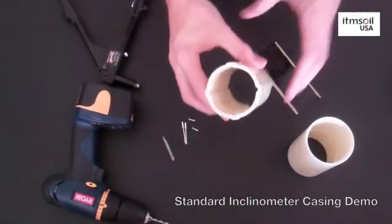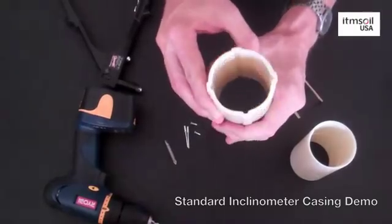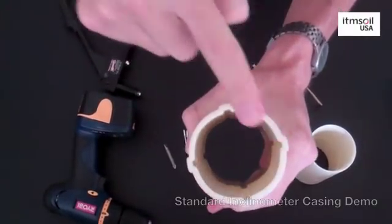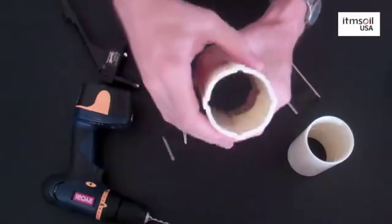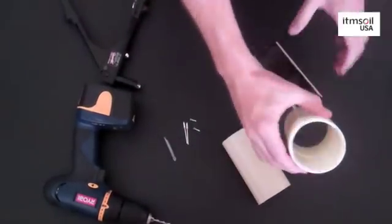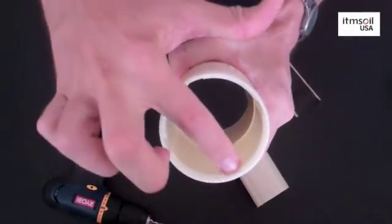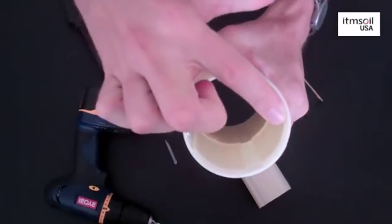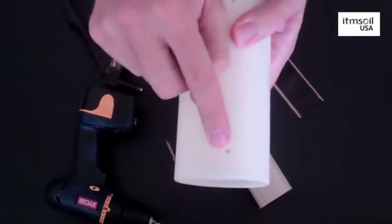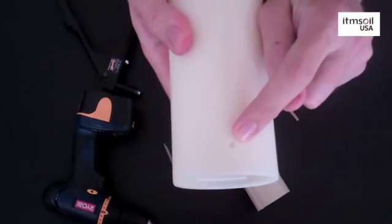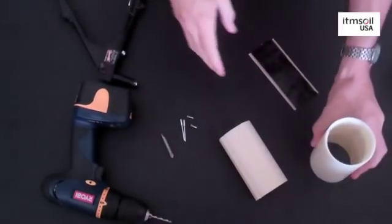ITM Soil USA's inclinometer casing consists of sections of ABS plastic casing which has four perpendicular grooves and the associated plastic couplings that have four guide grooves on the inside and two drilling guide holes on the outside at each end.